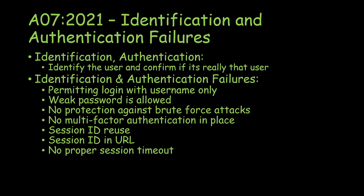First, we need to understand what identification and authentication are. Before any authentication takes place, there's identification, which is basically providing the ID — that is the user ID, account ID, email ID and so on. This ID will always be unique; one ID is allocated to one user. Once the user is identified by providing the ID, then comes authentication — you are claiming to be this particular user, but are you actually this user? That's where authentication comes in. They ask for a password, OTP pin or something similar, to confirm that you are the user you're claiming to be.